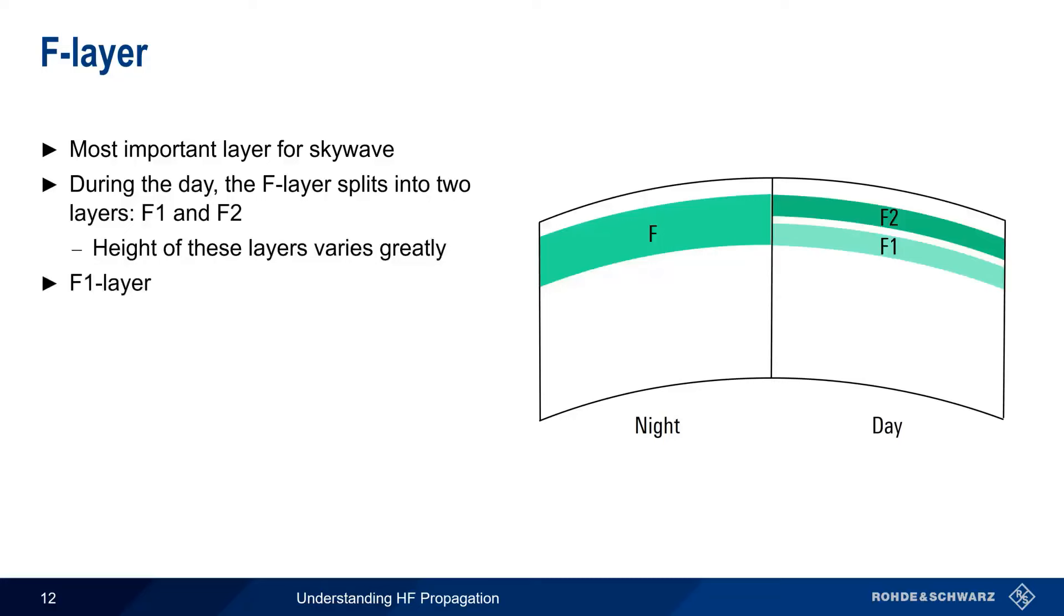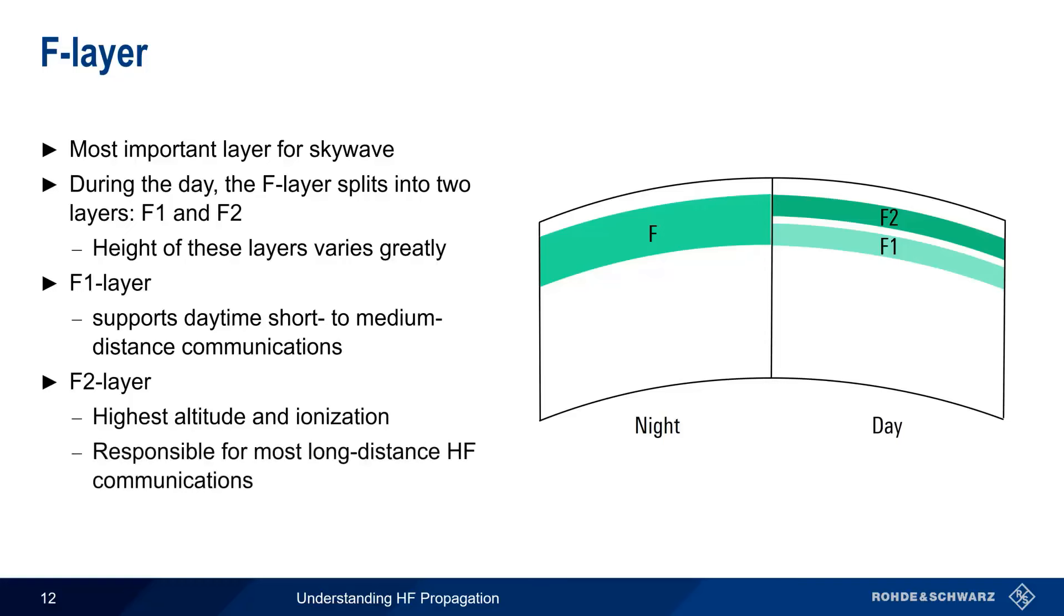The lower F1 layer primarily supports short-to-medium distance communications during daylight hours. The F2 layer, on the other hand, is present more or less around the clock. It has the highest altitude and the highest ionization of all the layers, and therefore is responsible for the vast majority of long-distance HF communications.